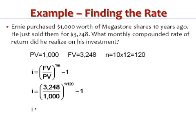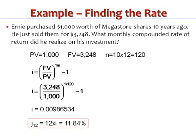What do we get? I is equal to 0.00986534. Multiply that by 12 and then multiply by 100 and add the percent sign to get the J12, or the nominal rate compounded monthly. So that's the annual rate compounded monthly: 11.84%. And that's all you have to do.